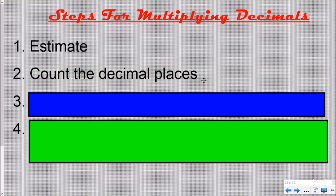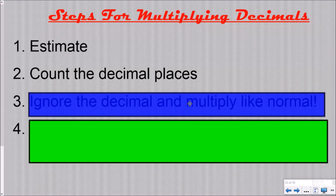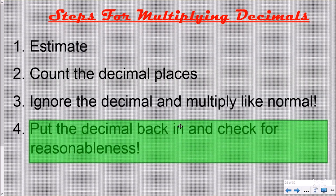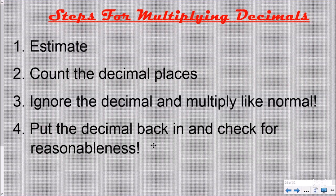Step two: count the decimal places. Before you multiply, count how many total decimal places you have — this is a shortcut we're really going to focus on. If you want to conceptually understand why, check out another video on powers of ten. Step three: ignore the decimal — cross it out and multiply like normal. Step four: put the decimal back into your product and check using your estimate that your answer is reasonable.